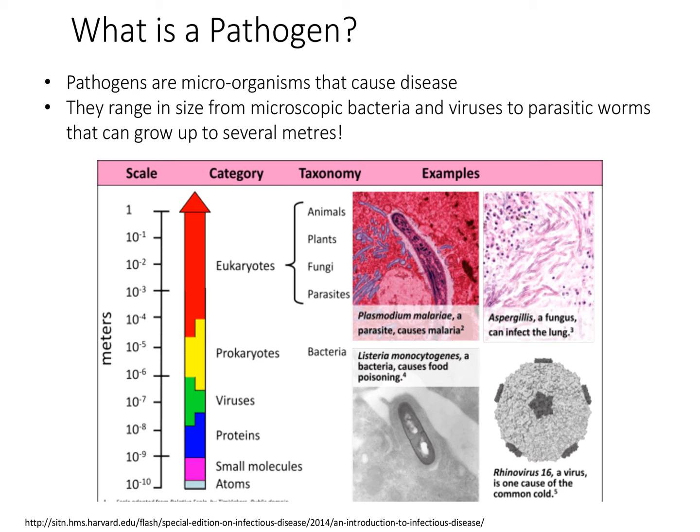What is a pathogen? Pathogens are microorganisms that cause disease. They range in size from microscopic bacteria and viruses to parasitic worms that can grow up to several meters. If you've been watching the previous video about bacteria and viruses, you'll already know the definition of pathogens and their transmission routes.